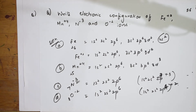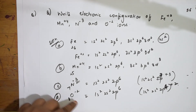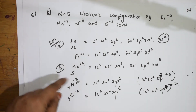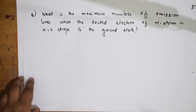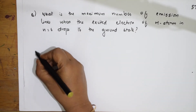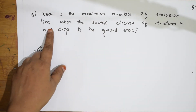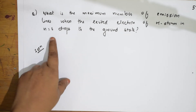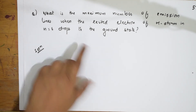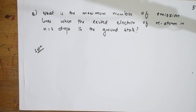Be careful with the signs — confusion here will give a wrong answer. Next: what is the maximum number of emission lines when an excited electron of a hydrogen atom in n=6 drops to ground state?